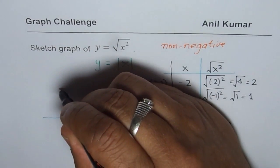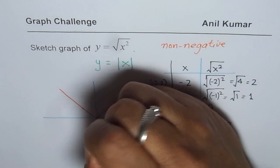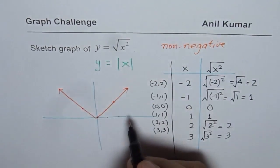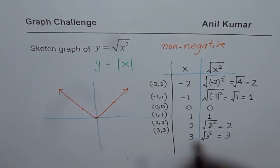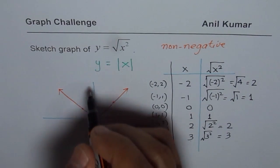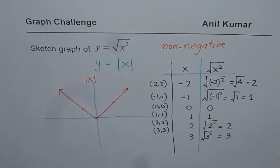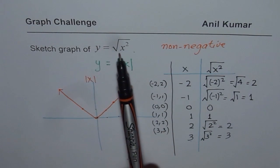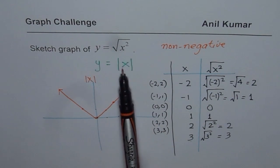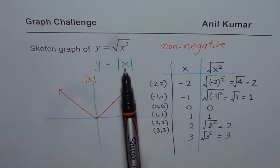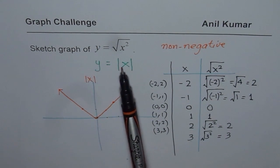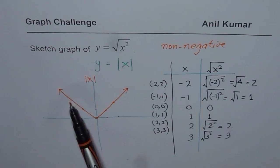You get a function which is absolute x. Do you see? This graph reminds you that this graph is of absolute x. Do you see that? So there are so many different ways of understanding that square root of x squared is indeed absolute x. It is not x. Do you see that?